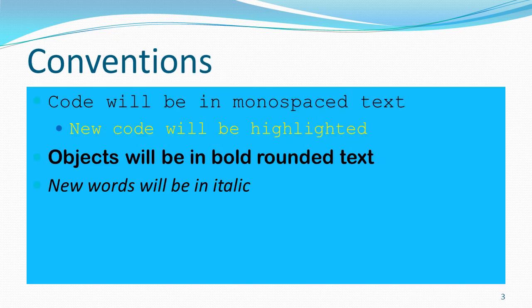The conventions used in this and other slides: code will always be in a monospaced text, and new code will be highlighted in yellow. Objects will be in bold, rounded text, and any new words I introduce will be in italics.